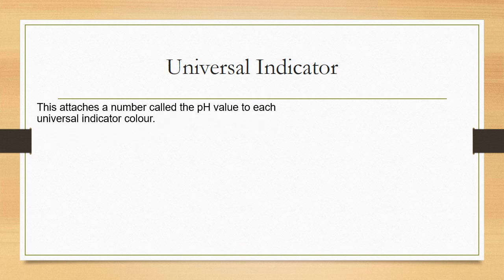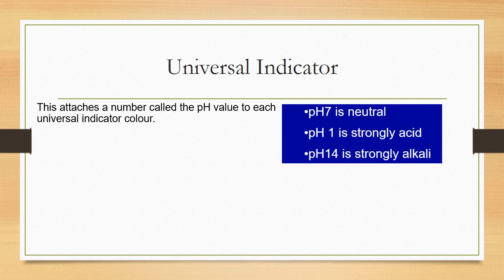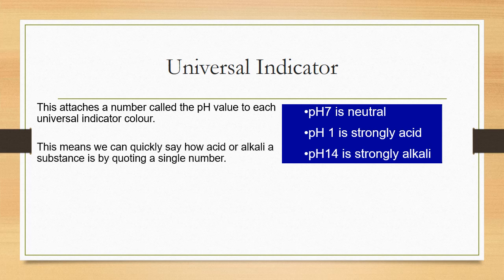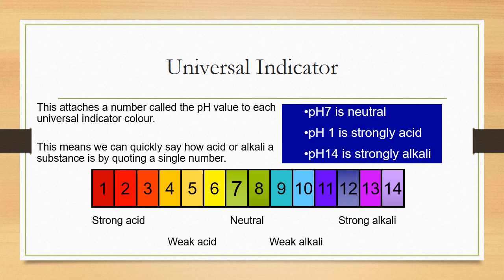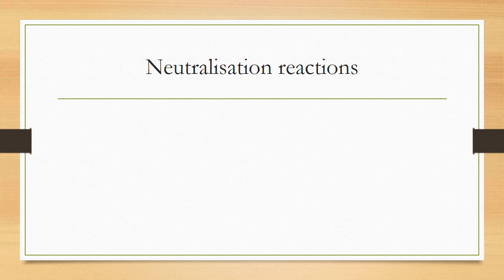The pH value is attached to each universal indicator colour, illustrating how strong or weak an acid or base is. pH 7 is neutral, pH 1 is strongly acidic, and pH 14 is strongly alkaline. Strong acids at pH 1–3 appear reddish, and strong alkalis at pH 12–14 appear purplish.